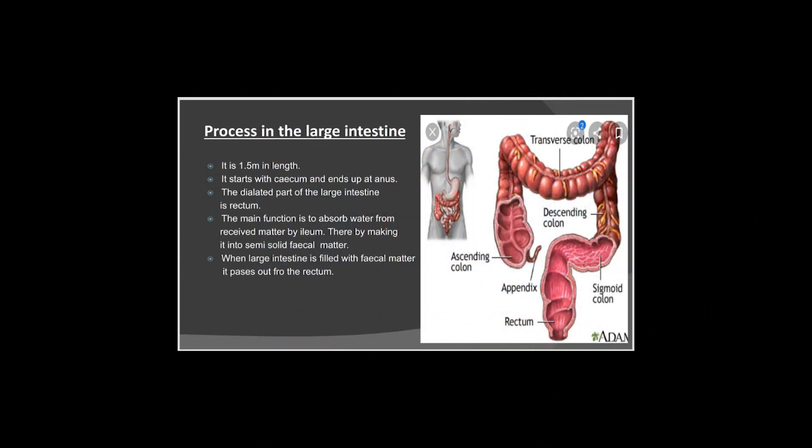Once the end products of digestion have been absorbed, the undigested food enters the large intestine. It is a tubular structure 1.5 meters in length, beginning at the cecum and ending at the anus. Water present in the undigested food is absorbed in the large intestine, and the rest is turned into semi-solid fecal matter. The fecal matter is stored in the rectum and released through the anus when necessary.